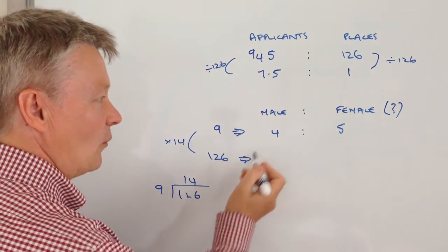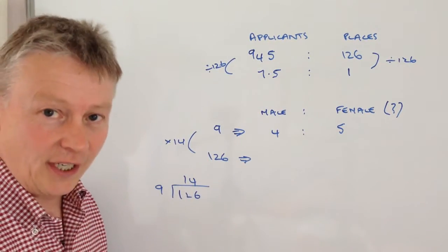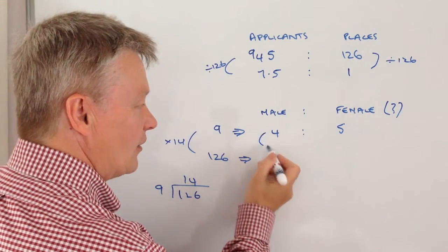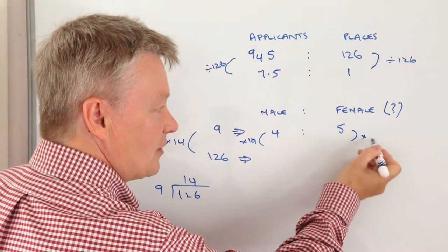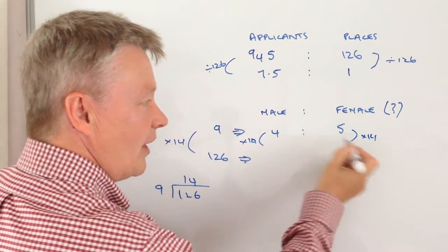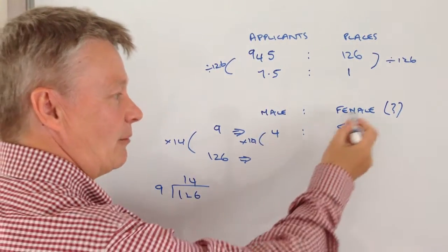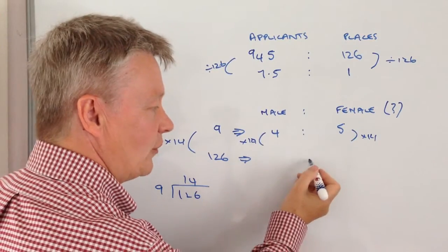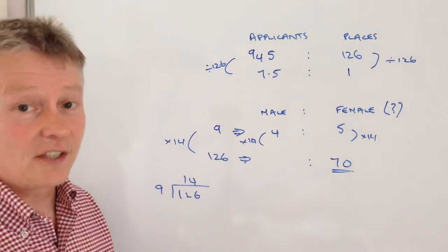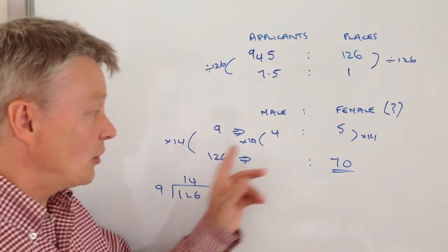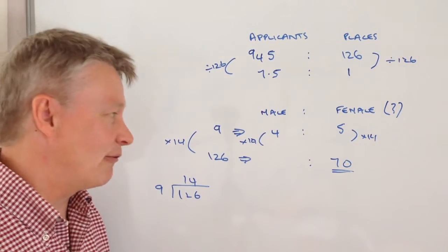So what we're saying is that we've multiplied the nine by 14 times. So we're going to do exactly the same with the male, we multiply that by 14, exactly the same with the female, multiply that by 14. The question is asking for the females, how many females there are? Well, five times 14 is actually 70, and that's the answer to this particular question.